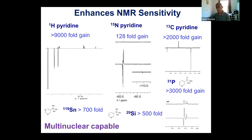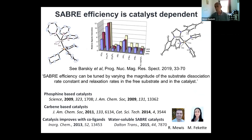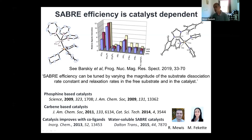What I wanted to focus on for a moment is that this process is catalytic, meaning it's dependent on the identity of the catalyst. When we set out SABER, we used some phosphine-containing catalysts. You can vary that phosphine ligand — there's a vast array of phosphines used for catalytic processes more generally — and you can see the outcome in terms of the efficiency of SABER is strongly dependent on the catalyst identity. We've spent quite a lot of time exploring that over the years.